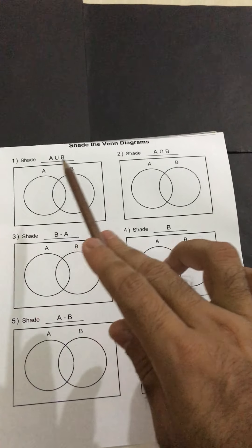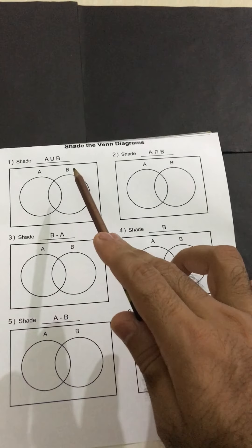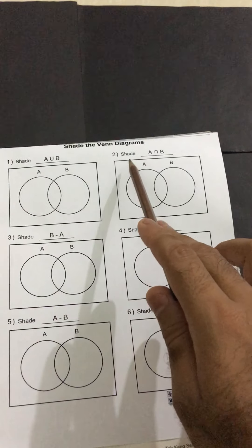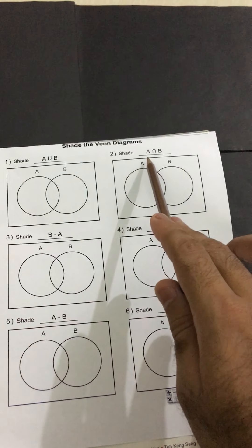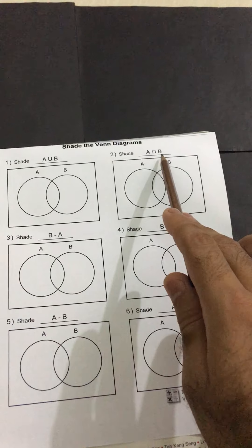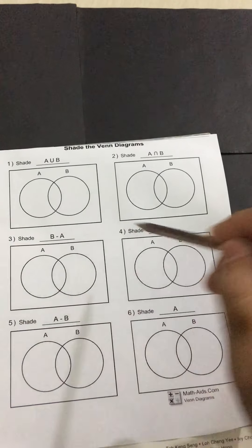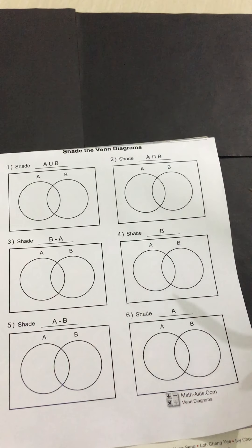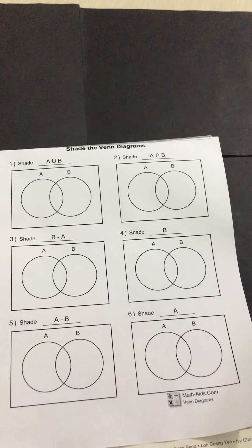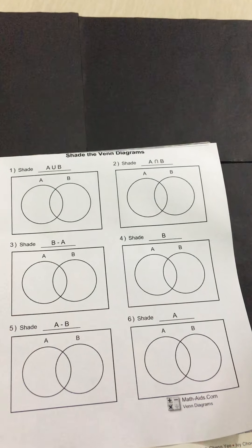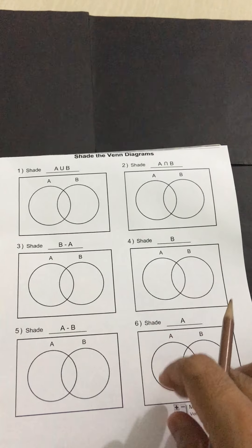In part one we have to shade the region that belongs to A union B. In the second part we have to shade A intersection B. In the third part we shade the region of B minus A. In the fourth part we shade the region of B. In the fifth part we shade A minus B, and in the last part we shade set A.